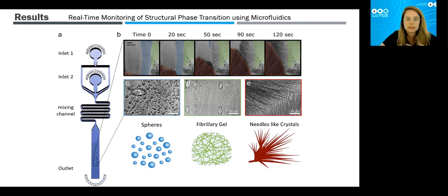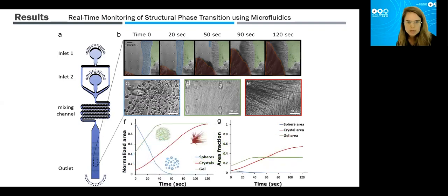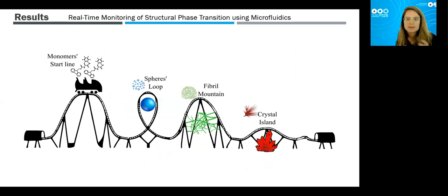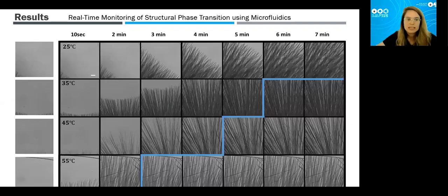I obtained a really nice video showing another phase in the system: in the middle of the channel I could see spheres disappearing and replaced by growing fibrils and crystals. I could only observe these spheres in the real-time setup — they are not stable. This suggests the self-assembly of Fmoc-pentafluorophenylalanine appears to be thermodynamically driven, following Ostwald's rule of stages, where metastable species are substituted by more energetically favorable species.